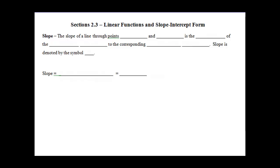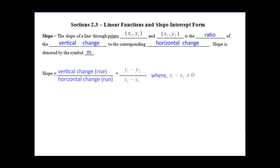Slope — the slope of a line through points. Let's take two points and call them x1, y1 and x2, y2. We're going to find the ratio of vertical change to horizontal change, and that's going to give us the slope. The slope is represented by m. The vertical change is called the rise, over the horizontal change, which is the run. Therefore, we get rise over run.